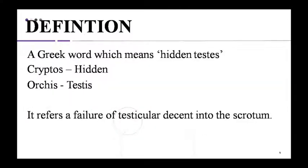The term cryptorchidism comes from a Greek word meaning 'hidden testes.' 'Crypto' means hidden and 'orchis' means testes. It refers to the failure of testicular descent into the scrotum.